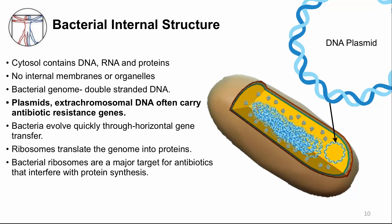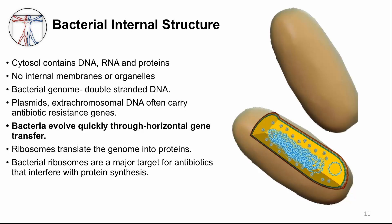Horizontal gene transfer is the exchange of genetic information between bacteria. This is different from inheritance, which is transfer of information from one generation to another. It is a way to quickly share genetic information even between bacteria of different families. In infectious diseases, this is particularly important because both pathogenic traits as well as antibiotic resistance can be transferred this way, making evolution much faster.